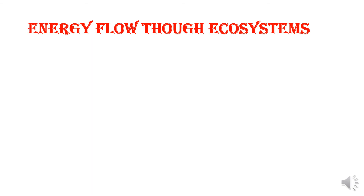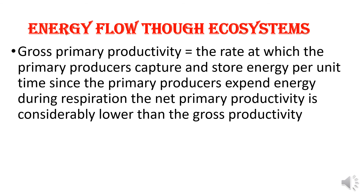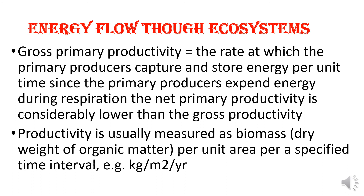Energy flow through ecosystem. Gross primary productivity is the rate at which the primary producers capture and store energy per unit of time. Since primary producers expend energy during respiration, the net primary productivity is considerably lower than the gross productivity. Productivity is usually measured as biomass, which means dry weight of organic matter per unit area per specified time interval.